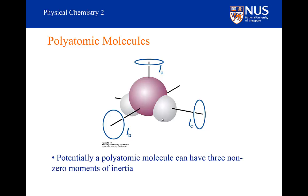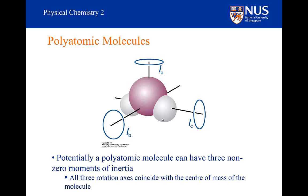If the polyatomic molecule is non-linear, it will have three rotational axes. If it is linear, it will have two rotational axes, just like the diatomics. All the rotational axes go through the center of mass of the molecule. This is quite a natural choice for the rotational axes of the water molecule, as I am sure you would agree.